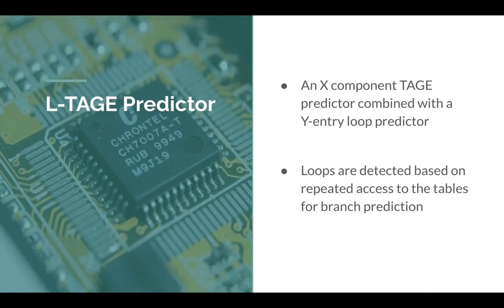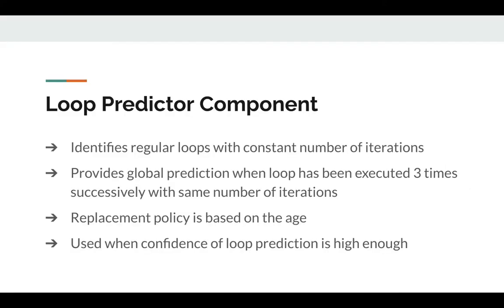The LTAGE predictor builds on TAGE by the use of a loop predictor. It combines an n-component TAGE predictor with a loop predictor, and loops are detected based on repeated access to the tables used for branch prediction. The loop predictor component identifies regular loops with constant numbers of iterations and provides a global prediction when the loop has been executed three or more times successively with the same number of iterations.